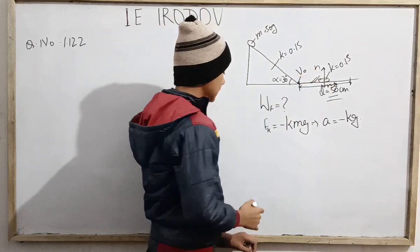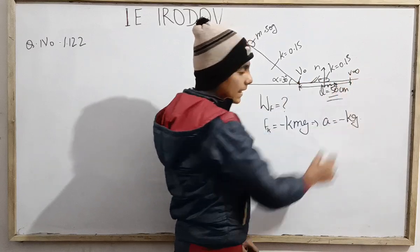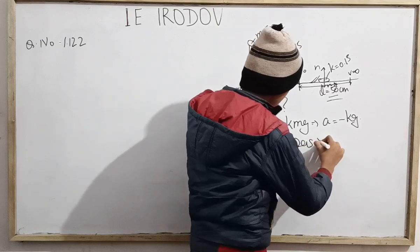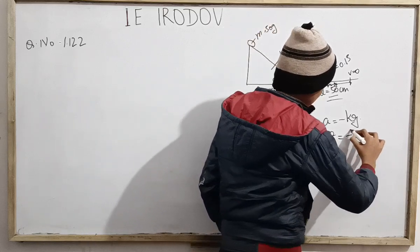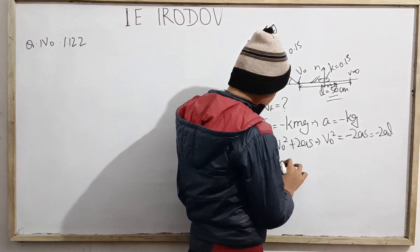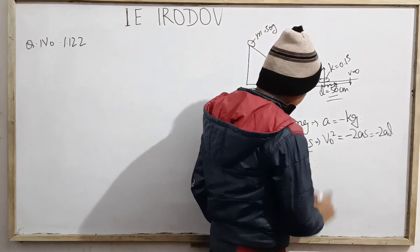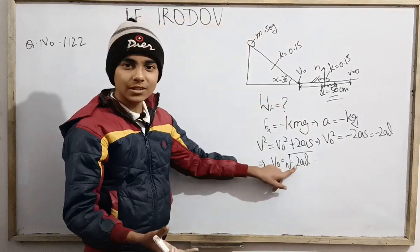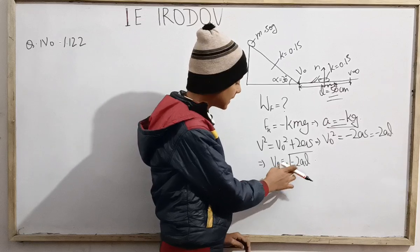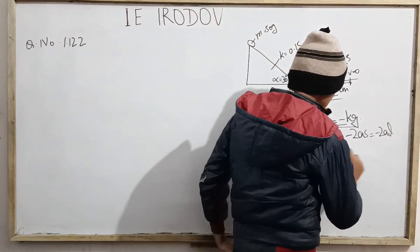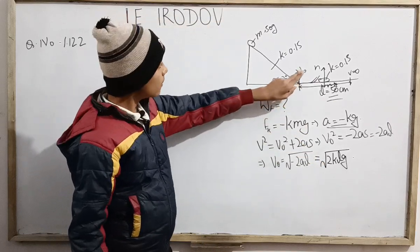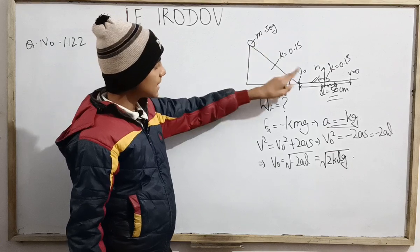Using this acceleration, we find v₀, the velocity at the bottom of the incline. Since v = 0 finally, using v² = v₀² + 2as, we get v₀² = -2as, that is v₀² = -2al. So v₀ = square root of (-2al). Since a is itself negative (= -kg), this becomes v₀ = square root of (2kgl). That is our v₀.